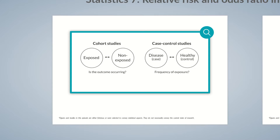There's a general rule when it comes to using the relative risk and odds ratio in both epidemiological study types. The relative risk is used in cohort studies, whereas in case-control studies, only the odds ratio is applied.